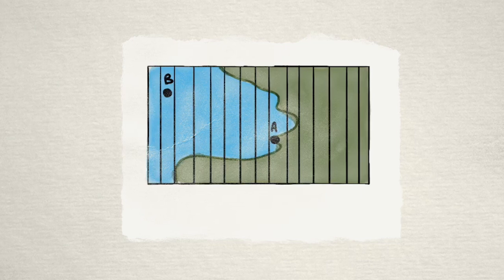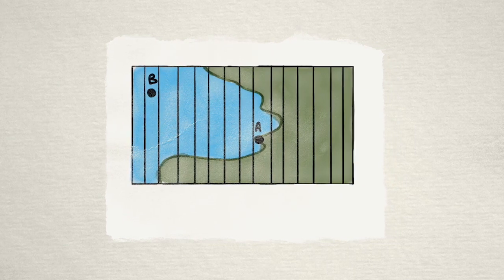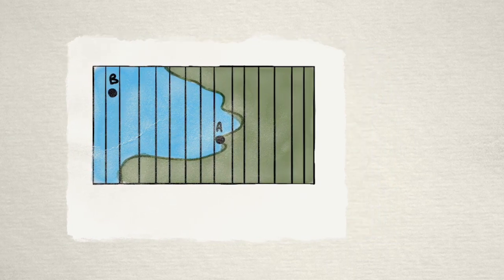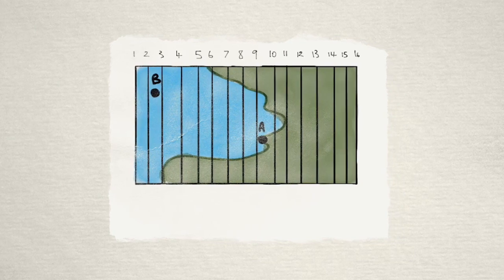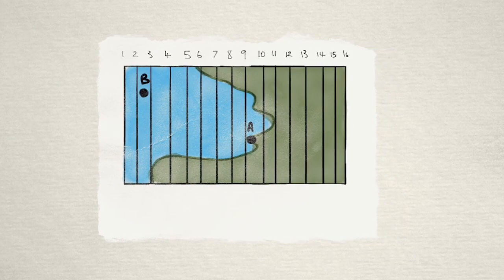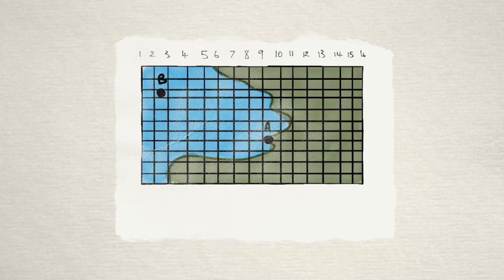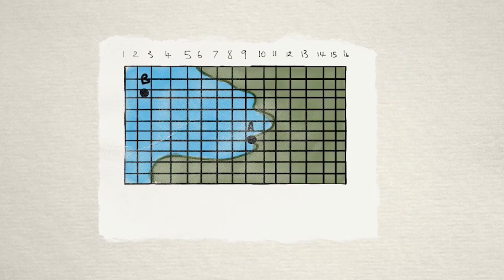The cartographer or mapmaker is going to make sure all those lines are equidistant and we'll number them sequentially going from left to right, the numbers getting bigger the further east you get, and we'll do the exact same thing with lines running from south to north.